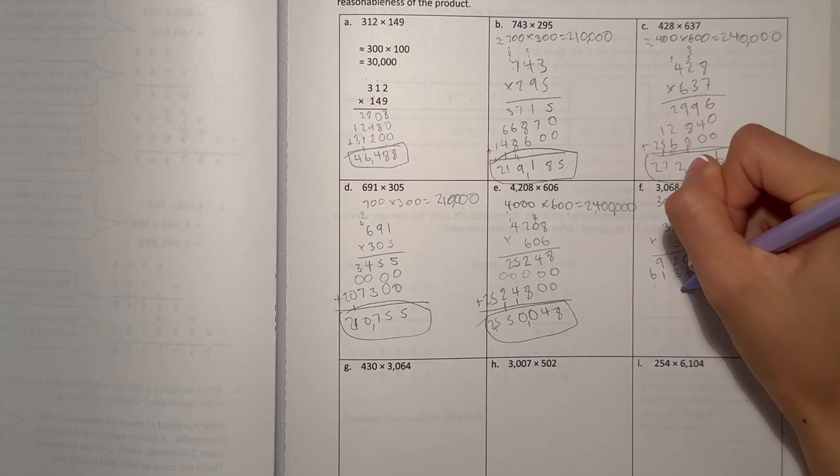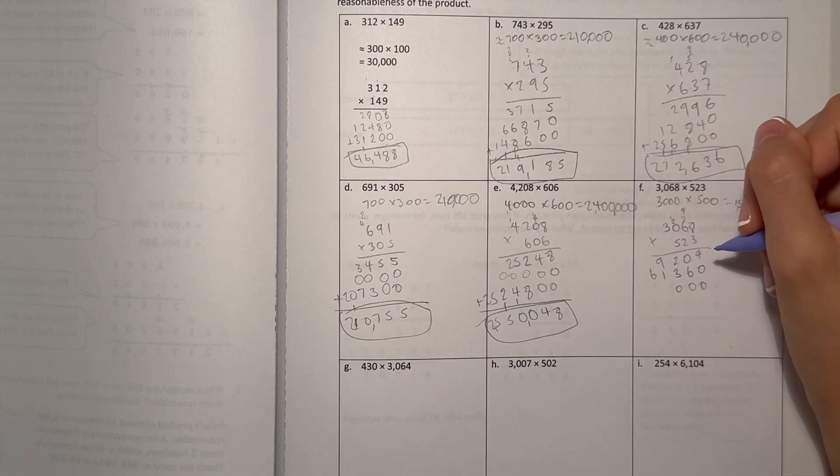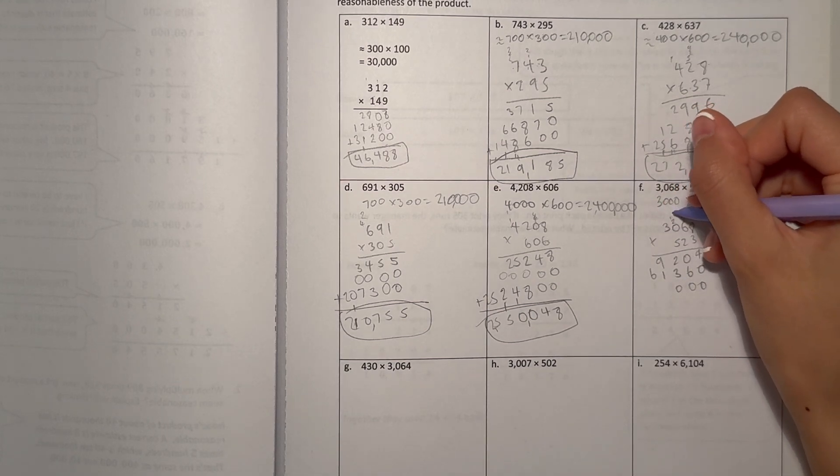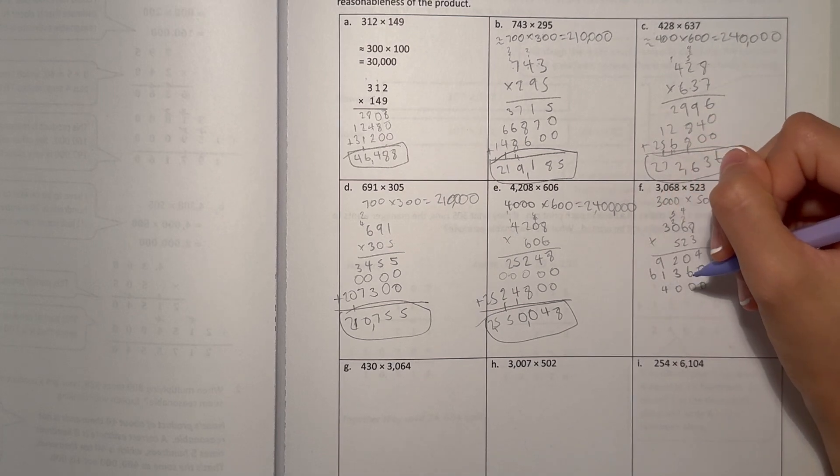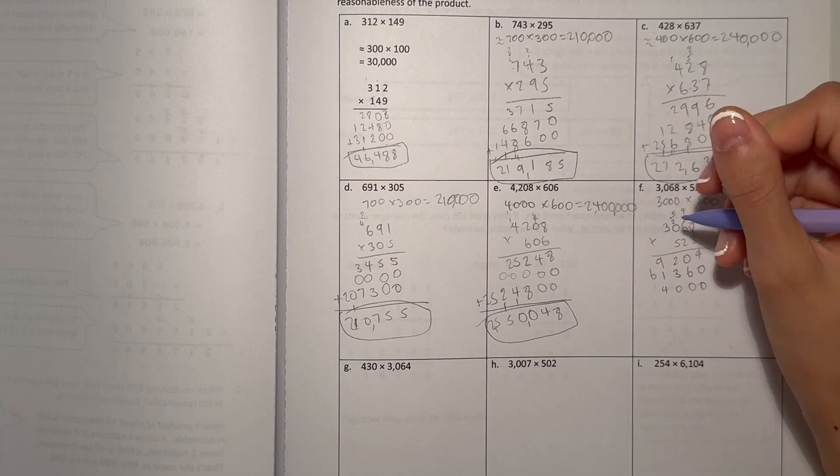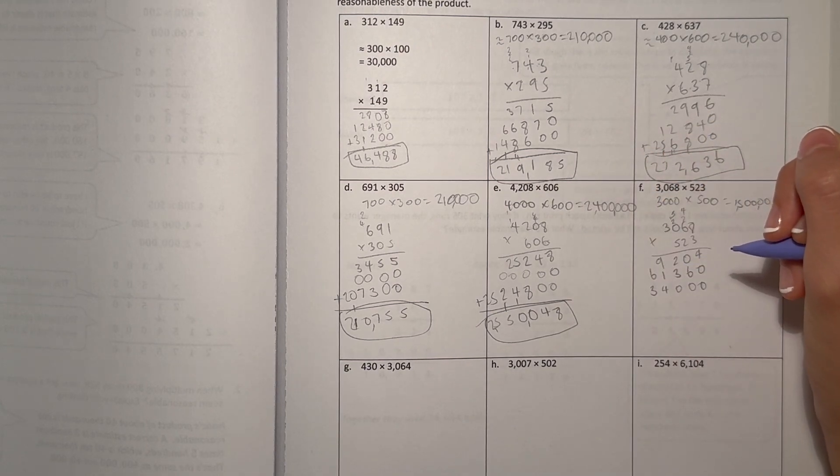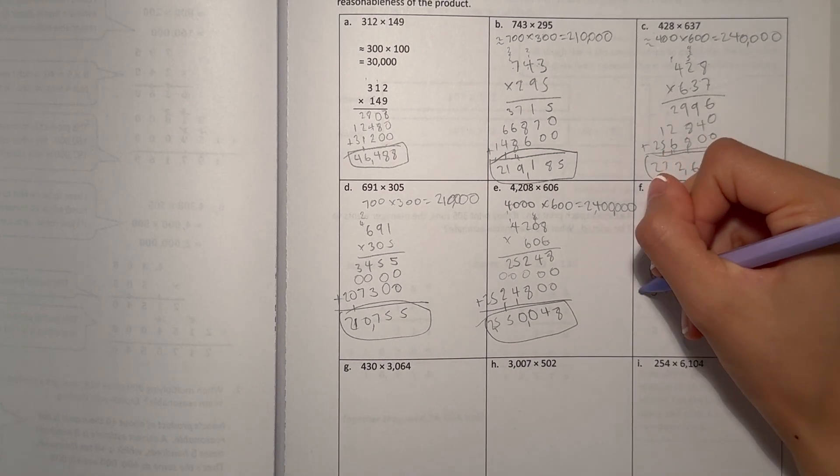Now 0 is 0. 5 times 8 is 40. 6 times 5 is 30, plus 4 is 34. 0 times 5 is 0, plus 3. Wait. That's 3. And then 3 times 5 is 15.